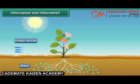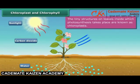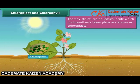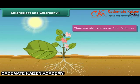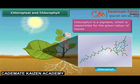Leaves make their food with the help of photosynthesis. The tiny structures on the leaves inside which photosynthesis takes place are known as chloroplasts. Due to their role in food production, they are also known as food factories. Chloroplasts are green in color. They get their color from a pigment called chlorophyll. Chlorophyll helps leaves prepare food.